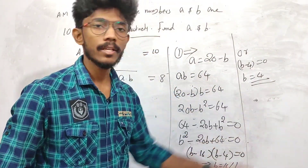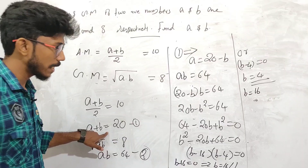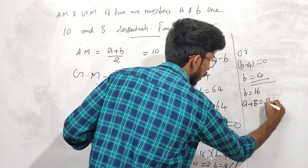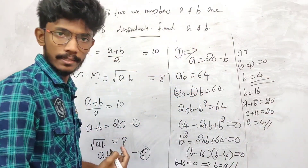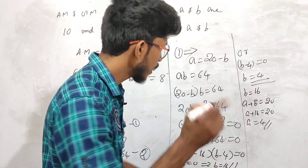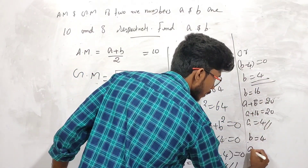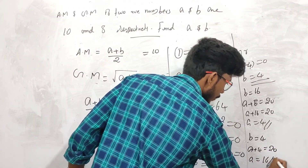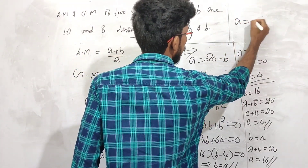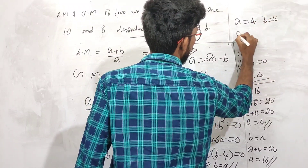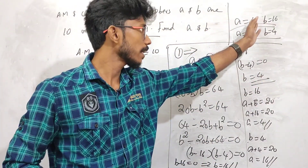If b equals 16, then from a plus b equals 20, a equals 4. If b equals 4, then a equals 16. So the two numbers are 4 and 16.